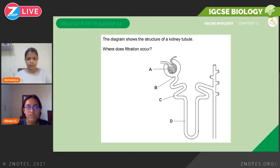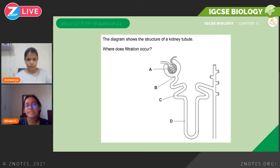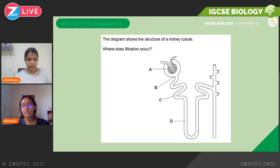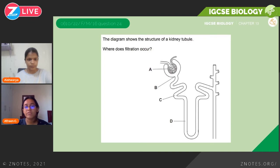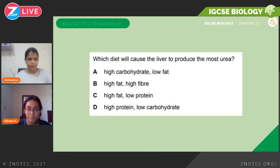Now let's look at some questions. This is February/March 2016: 'The diagram shows the structure of a kidney tubule. Where does filtration occur?' If you remember, this is known as ultrafiltration and it happens in the Bowman's capsule — that is option A.